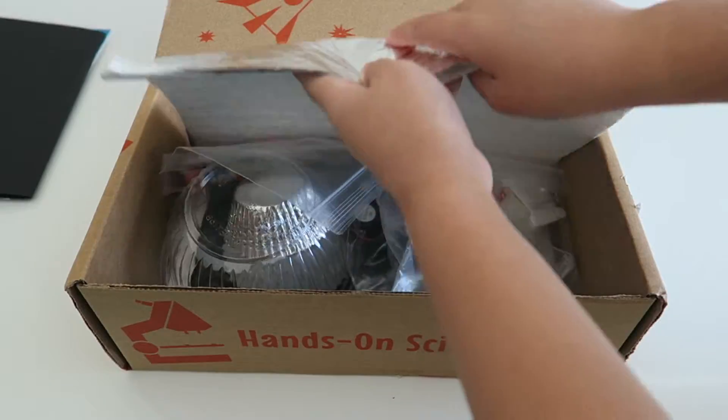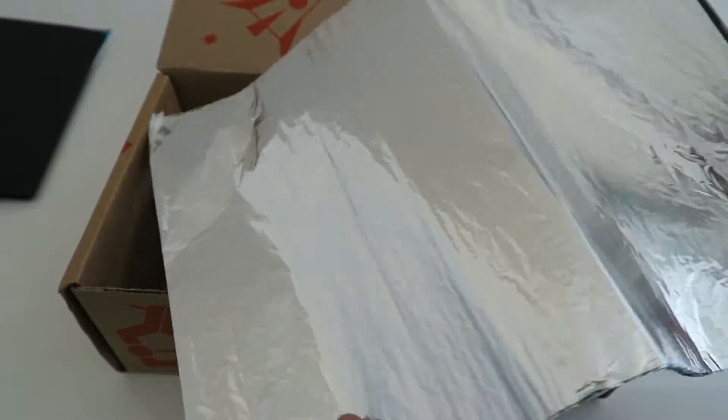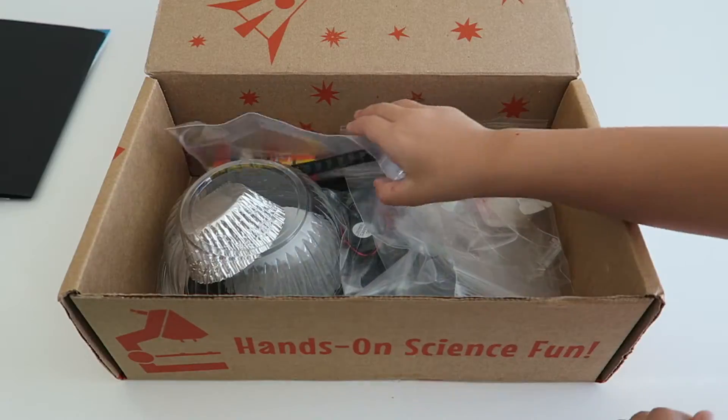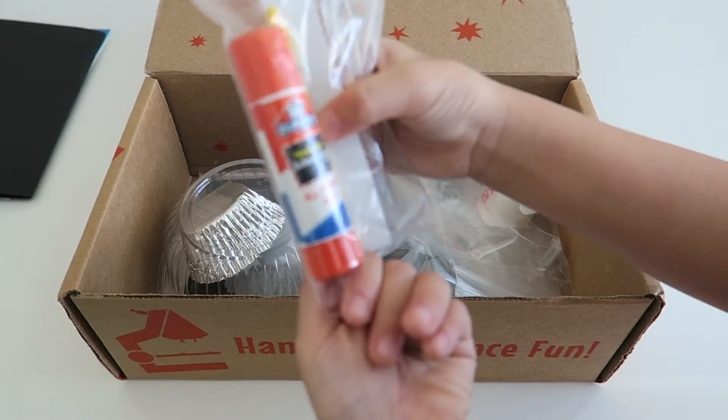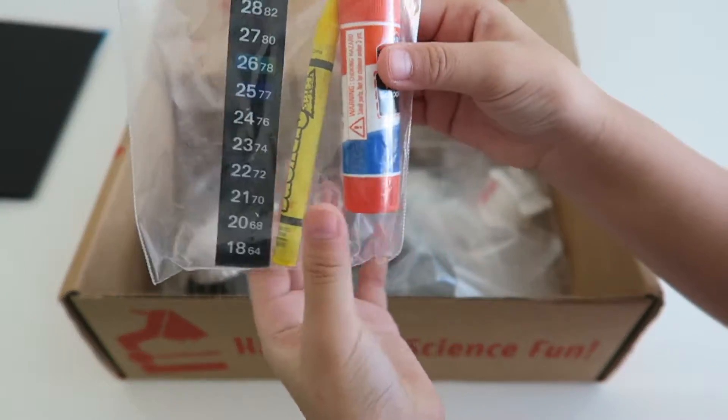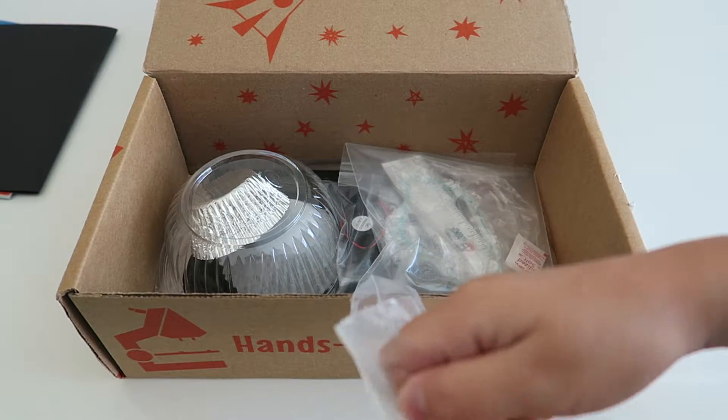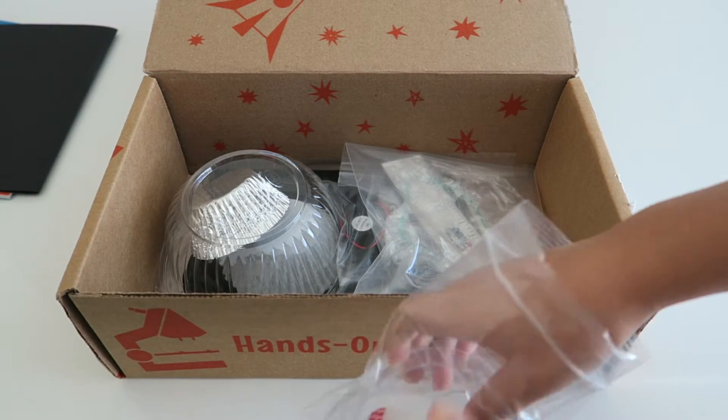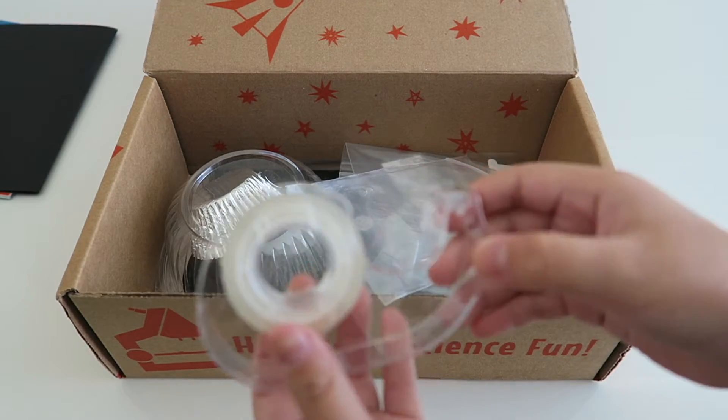The next item we have is the foil sheets. Here's the foil sheets. The next thing is a thermometer, a crayon, and a glue stick.